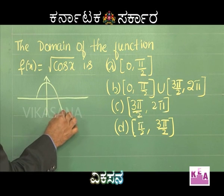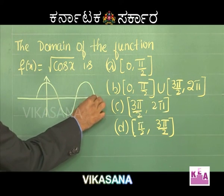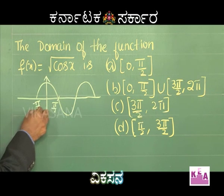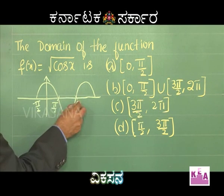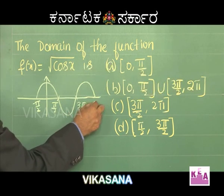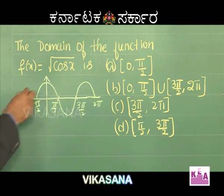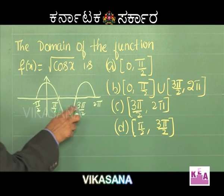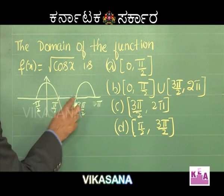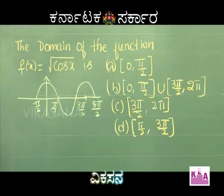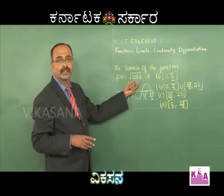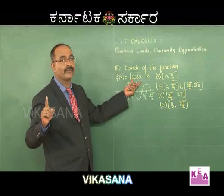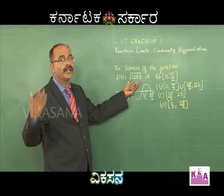On the graph, key values are 0, π/2, 3π/2, 2π. Cos of any odd multiple of π/2 gives 0. Root of cos x is defined only when cos x is non-negative, that is, cos x ≥ 0. So we need to find where cos x is greater than or equal to zero.